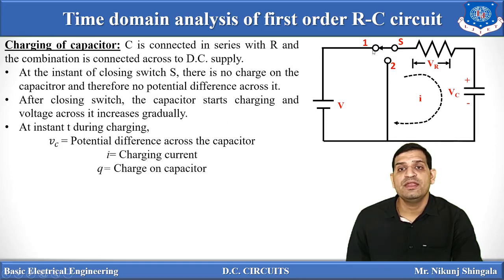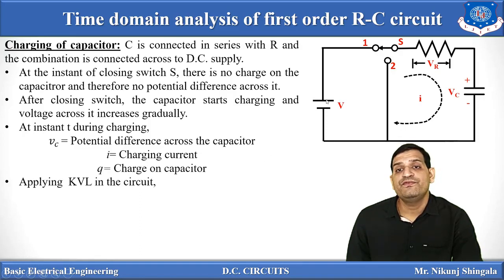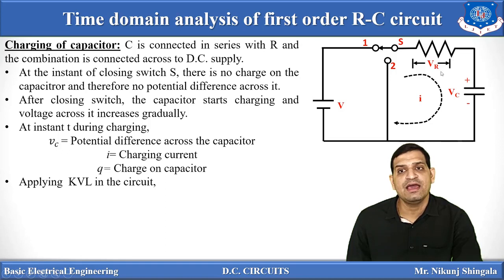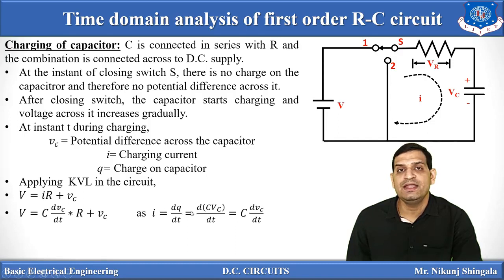Now the switch is connected to position one and the circuit is complete, current is already flowing. The value of current will be decided by the value of the resistance, so the charging time of the capacitor will be decided by the value of R. Now if we apply KVL in this loop, we get: total voltage V equals VR plus VC, and VR equals IR. So we can write V equals IR plus VC. Now I equals dQ/dt.